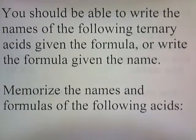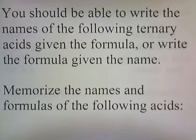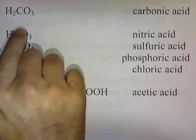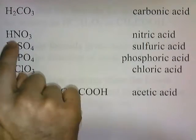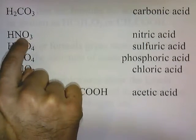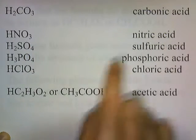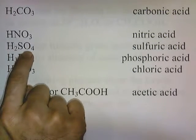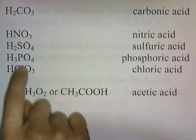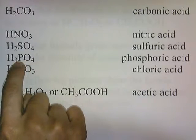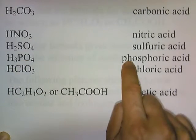You should be able to write the names of the following ternary acids given the formula, or write the formula given the name. Memorize these: H2CO3, which contains carbonate, is carbonic acid. HNO3, which contains nitrate NO3, is nitric acid. H2SO4, which contains sulfate SO4, is sulfuric acid. H3PO4, which contains phosphate PO4, is phosphoric acid.